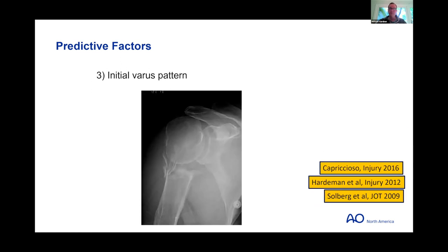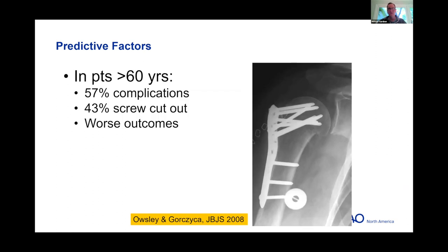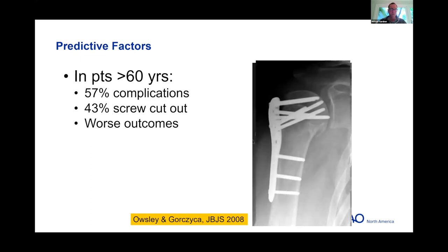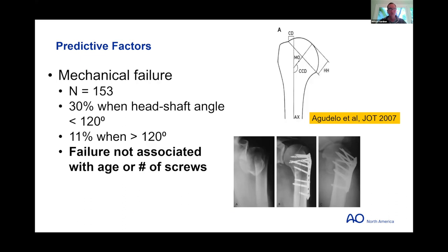Here are a few studies. One of the earliest series of proximal humerus locking plating outcomes — JBJS 2008, Rochester, New York — in patients over 60 showed a 57 percent complication rate and 43 percent screw cutout. Another study out of Denver, 153 patients: when neck-shaft angle was less than 120 degrees or in varus, there was a 30 percent failure risk; greater than 120 degrees or valgus, 11 percent. Interestingly, failure risk was not associated with the number of screws.